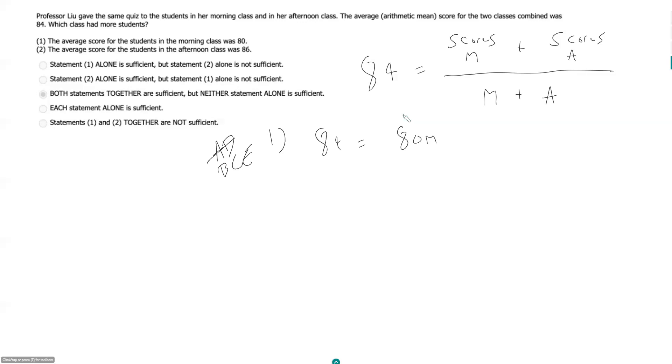And then in fact, it looks like we'll be able to do the same thing for statement two for the afternoon class. So here we'll just have 80 times M plus scores for the afternoon class over M plus A. So again this isn't super helpful because we don't know anything about that.